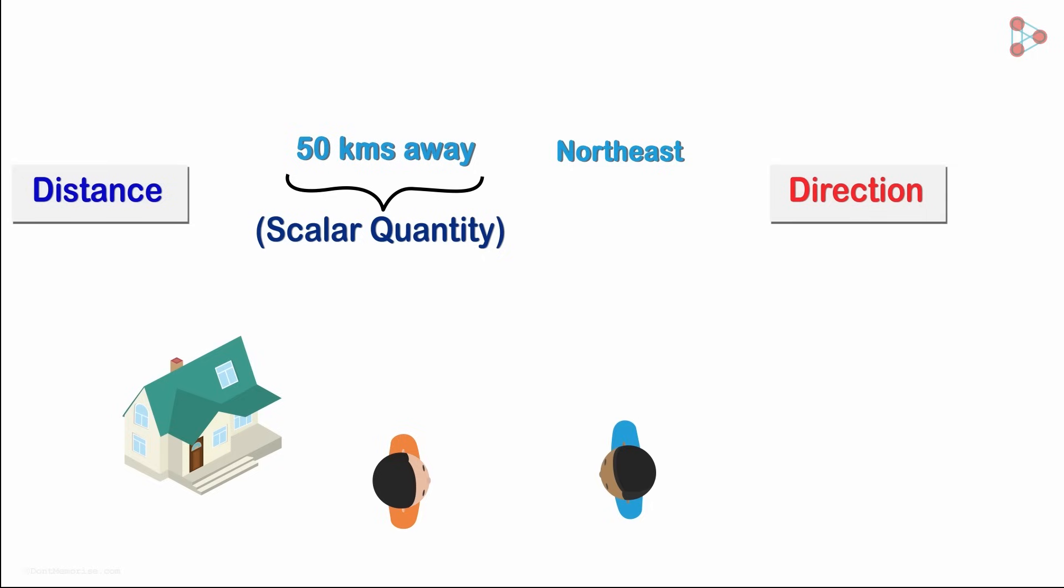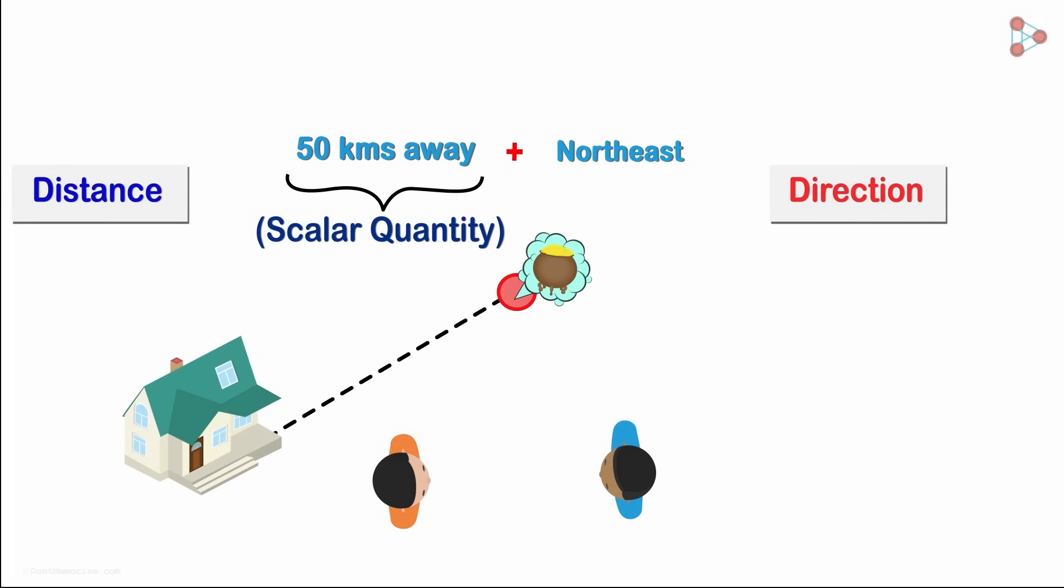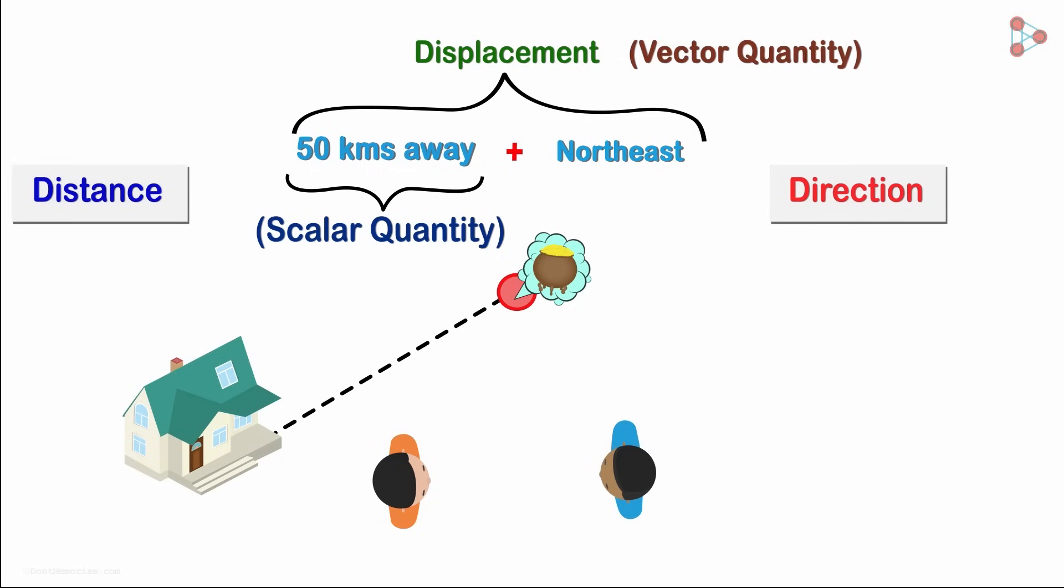This now becomes two-dimensional information, distance and direction. The treasure pot is over here. Two-dimensional information like this is called a vector quantity.